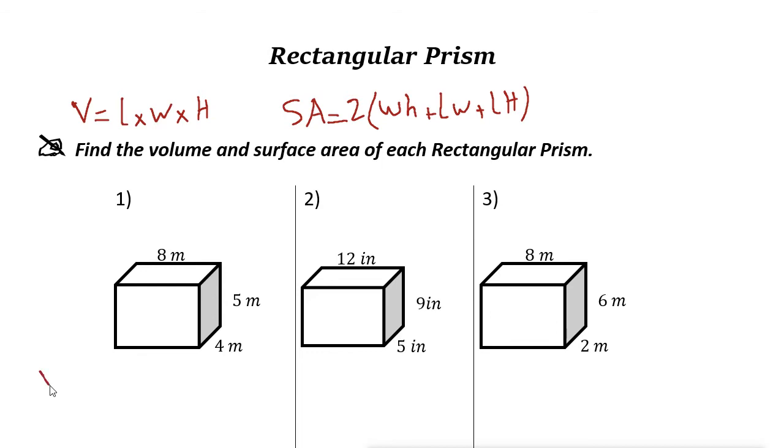For this one, volume is easy. Just multiply all sides: 8 times 5 times 4. It is 4 times 5, 20 times 8 is 160, and it is cubic meters.